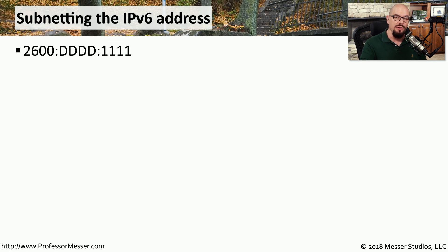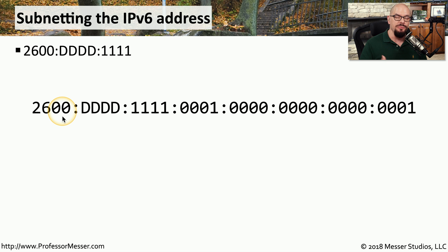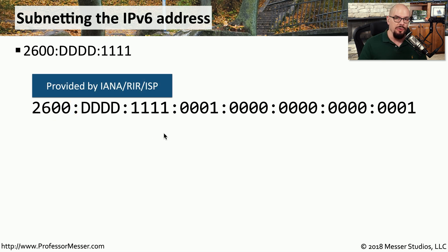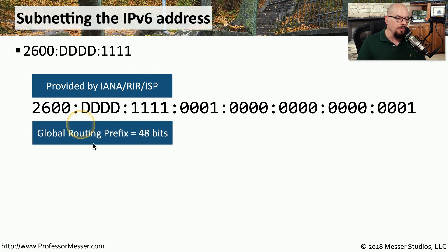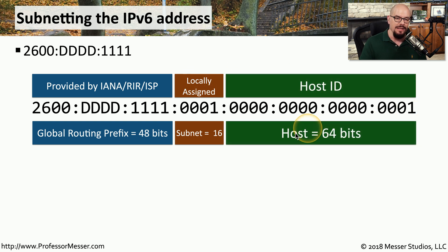Let's say that you are a customer of that ISP and you've been assigned 2600:DDDD:1111. Now it's up to you to subnet this further, depending on your requirements. Here's an IPv6 address created from these assigned addresses. The first three groups of this IP address are the ones assigned by the IANA, the RIR, and ultimately the ISP. We refer to these 48 bits as the global routing prefix. Then you, as the customer, would create an additional locally assigned group — a subnet group of 16 bits. In this example, we started with the very first one, which is 0001. The rest of the IPv6 address is the host ID, and that's 64 bits long.